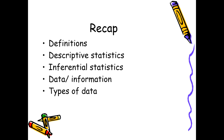We discussed how sampling is done from the population, what the different types of sampling are, how data is generated, and what the different types of data are. Data is divided into primary and secondary data, and into qualitative and quantitative data. Depending upon the type of data, the biostatistician decides how to handle it, so it is important to categorize the data in the initial first step.